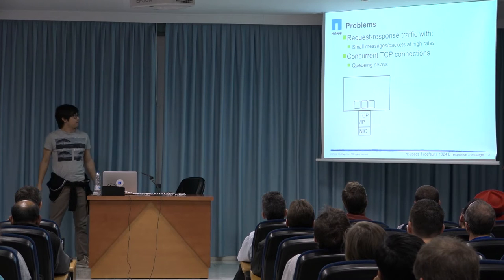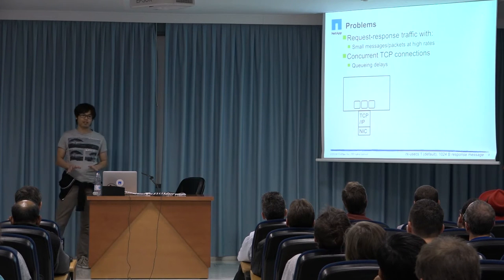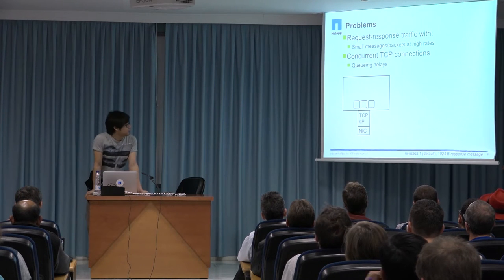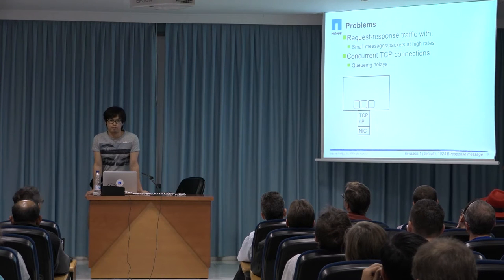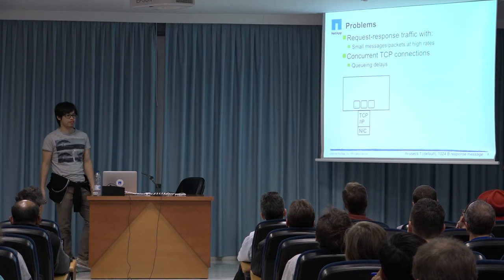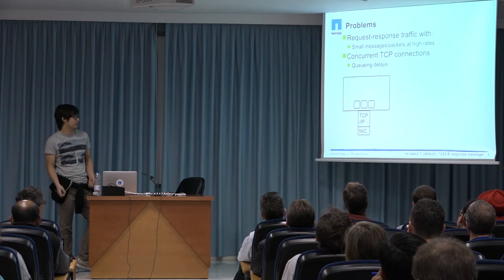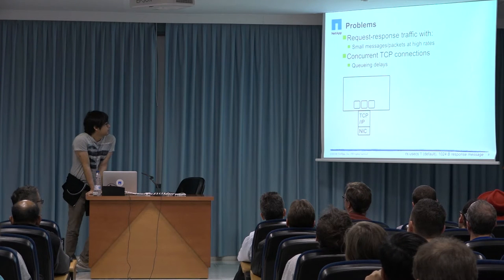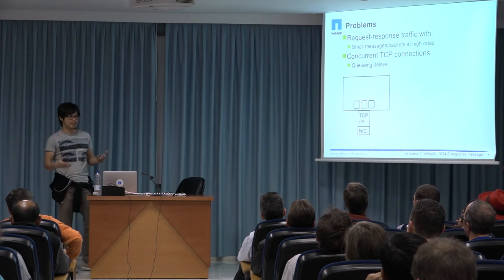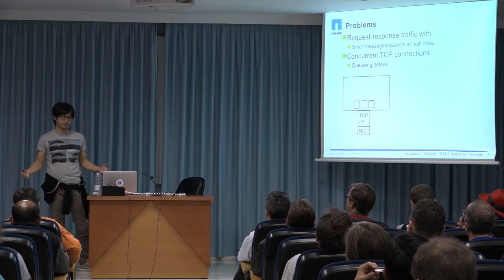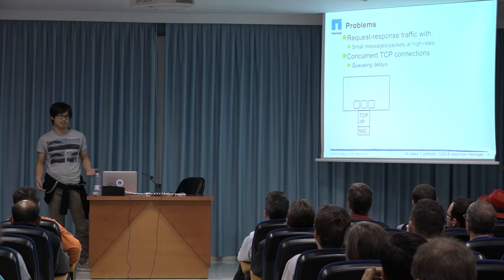In this work, we specifically focus on two combined problems. Linux TCP/IP performs pretty well for bulk data transfer such as large file sends, but it doesn't perform well compared to user-space TCP/IP for request-response traffic with small packet messages at high packet rate. For such workload, a server must handle a large number of concurrent TCP connections, which creates long queuing delay. Let me explain how such queuing delay happens.